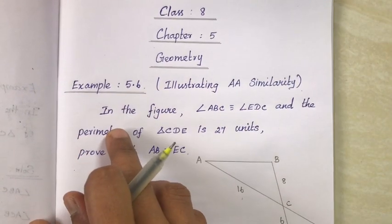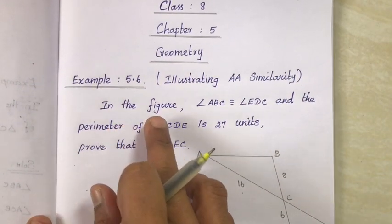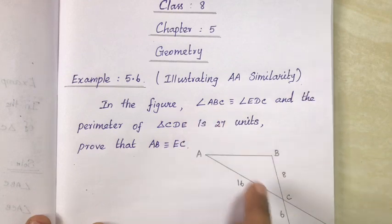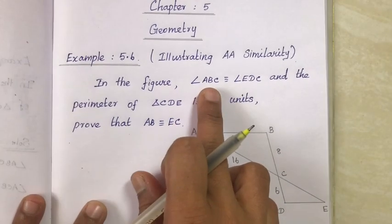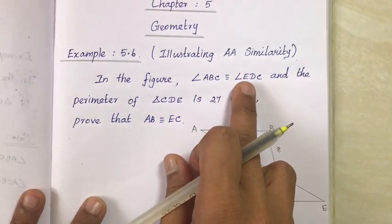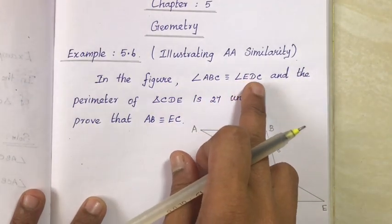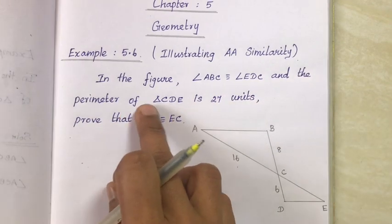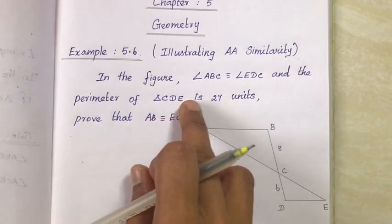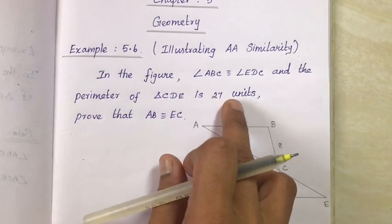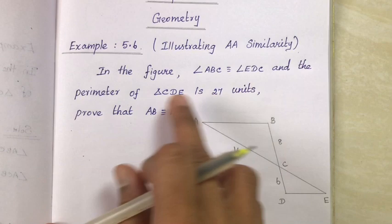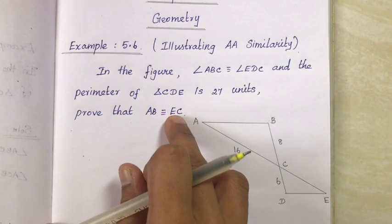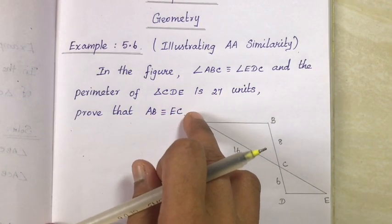The question is: in the figure, angle ABC is identically equal to angle EDC and the perimeter of triangle CDE is 27 units. Let's prove that AB is identically equal to EC.